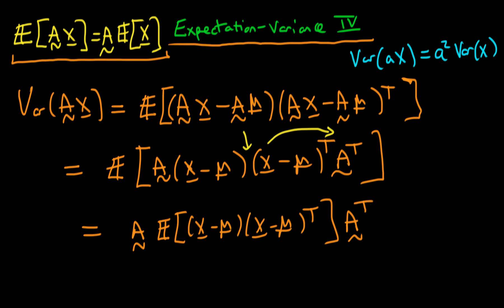And finally we notice that this term in the middle here is just the variance of our random vector x. So we know that the variance of A times x is just defined as A times the variance of x times A transposed.